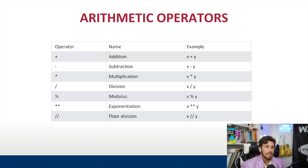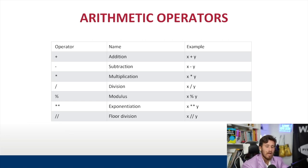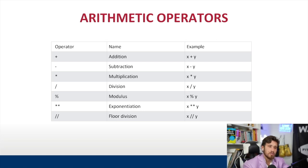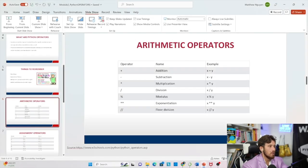Exponentiation uses two star signs and means 'to the power of.' The floor division operator uses double slashes — it divides two numbers and gives you the rounded-down result. There's no built-in ceiling in Python, but you can import the math library and use math.ceil; we'll cover importing libraries later. So 10 floor-divided by 3 will equal 3, not 3.333 — it always rounds down.